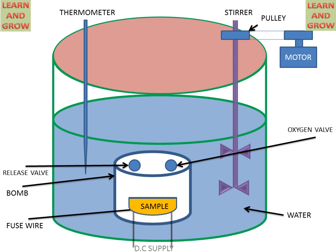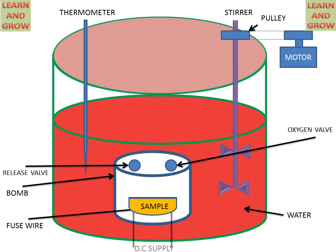Then, DC supply is given to this fuse wire and the sample starts burning or liberating heat. This oxygen valve is used for giving oxygen to the sample for complete burning process. Then, after burning of the sample, heat will liberate and it will increase the water temperature.